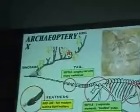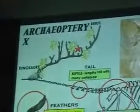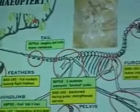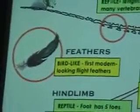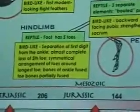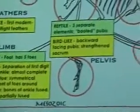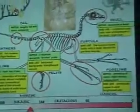Archaeopteryx is a mosaic of features between its ancestor and its descendant, with the green boxes representing reptilian-type features of its ancestor and the yellow representing the descendant features of the birds. You can see that in most cases there's a lot of mixing, and the list of ancestral and descendant features in this classic transitional fossil is incredibly lengthy.